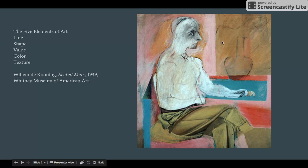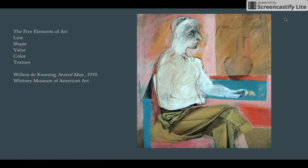Line outlines the figure in the face, in this vase, on the table, and in some respects, some geometric elements that make up the table and the chair. We can see some kind of line here, although it's not quite clear what it is. So line is used quite simply as outline.